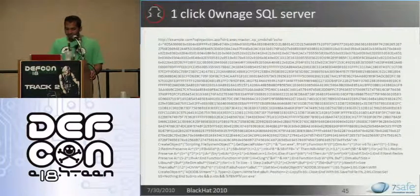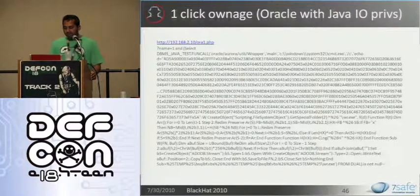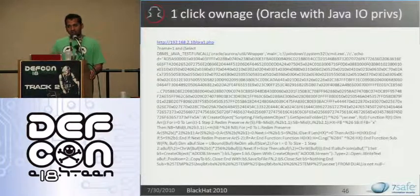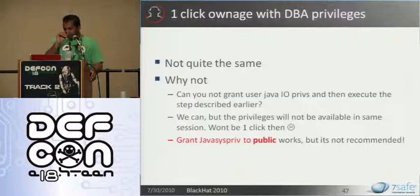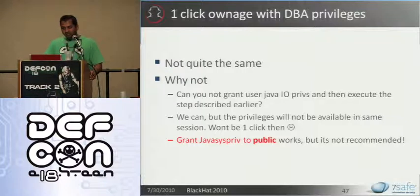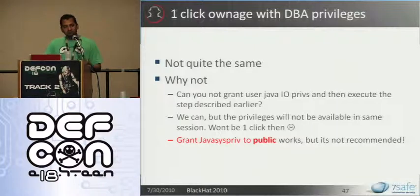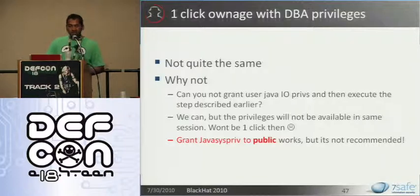If you have Java IO permissions, this is the attack string you can use for Oracle. Obviously depending on what public IP you want to throw the reverse connection on, this hex will change. When we wanted to do this with DBA privileges, things didn't quite work. We can grant ourselves Java IO permissions as DBA, but those permissions are not available in the same session — technically you have to log out and log back in. So technically it won't quite be one-click ownage; it will require more than one or two clicks. You can grant Java SYS permissions to the public role and permissions will be available in the same session, but if you are doing pen testing consultancy, granting something to public means the client will not be very happy.